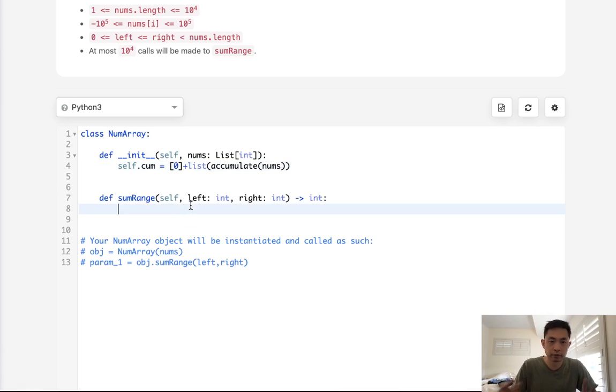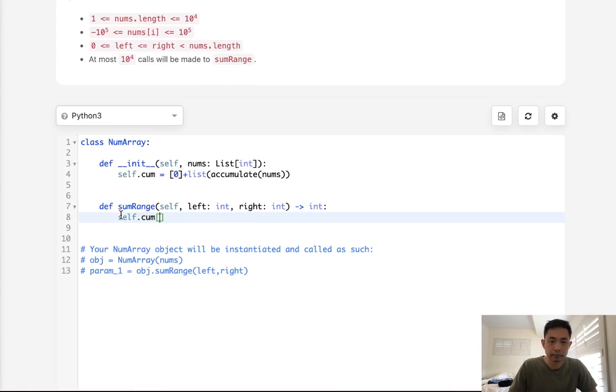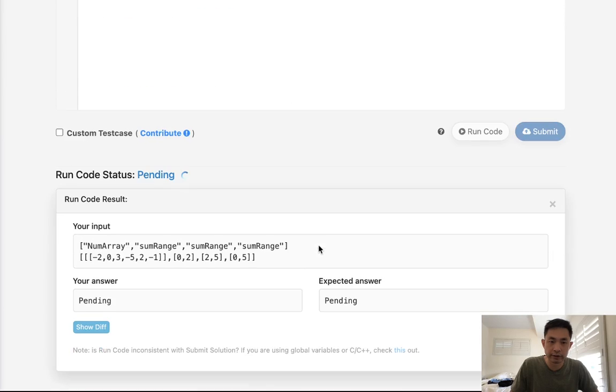Finally just to return the sum range all we need to do is return cumulative right subtracted by self dot cumulative left minus 1. I believe that's correct. Let's make sure this works.